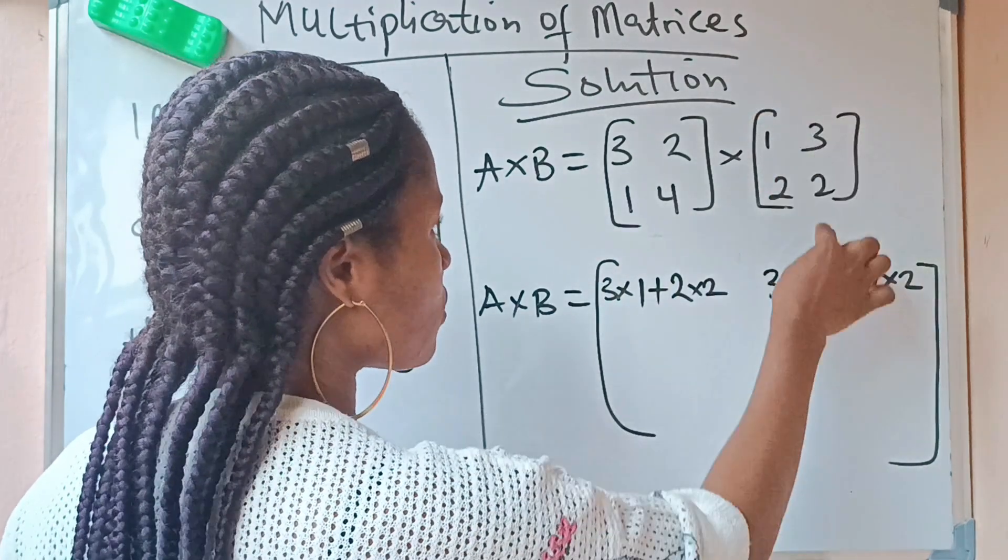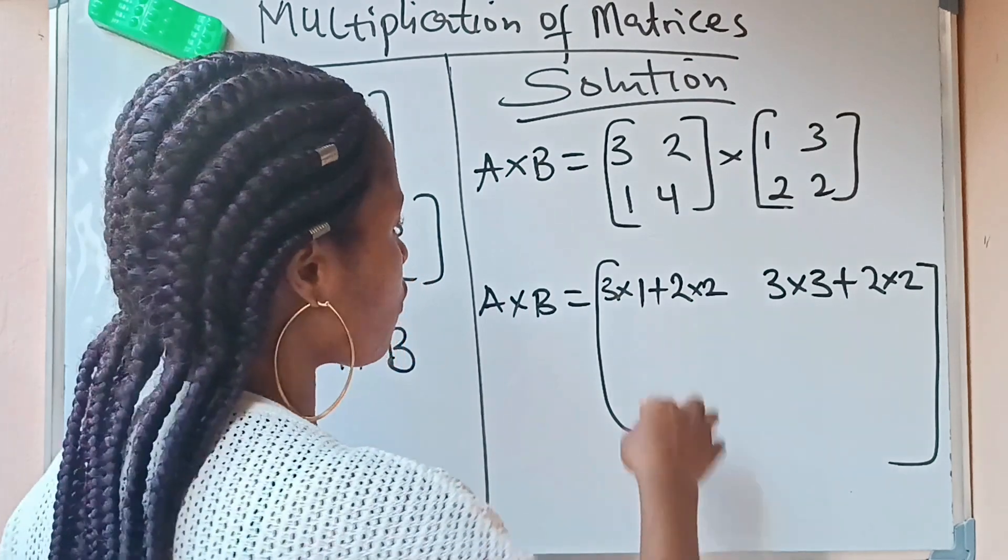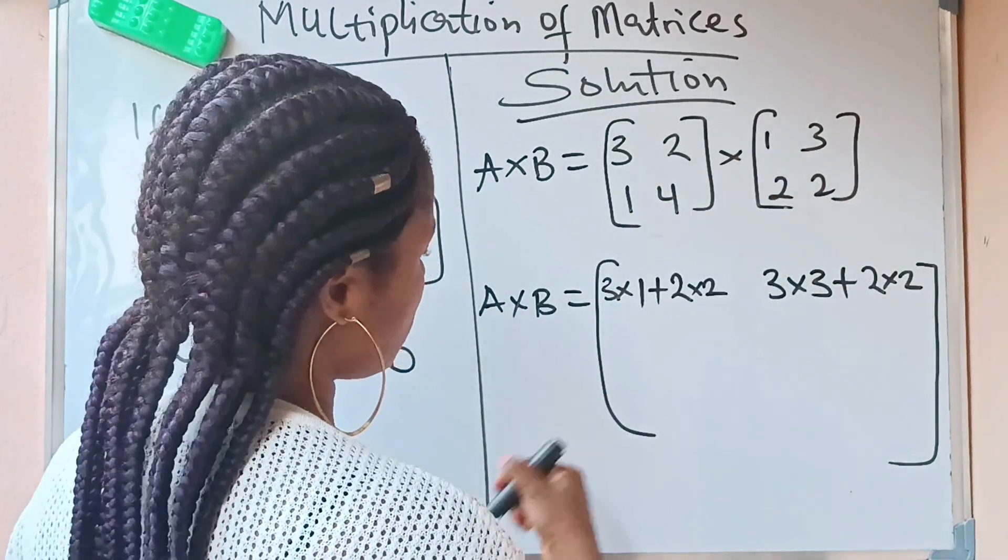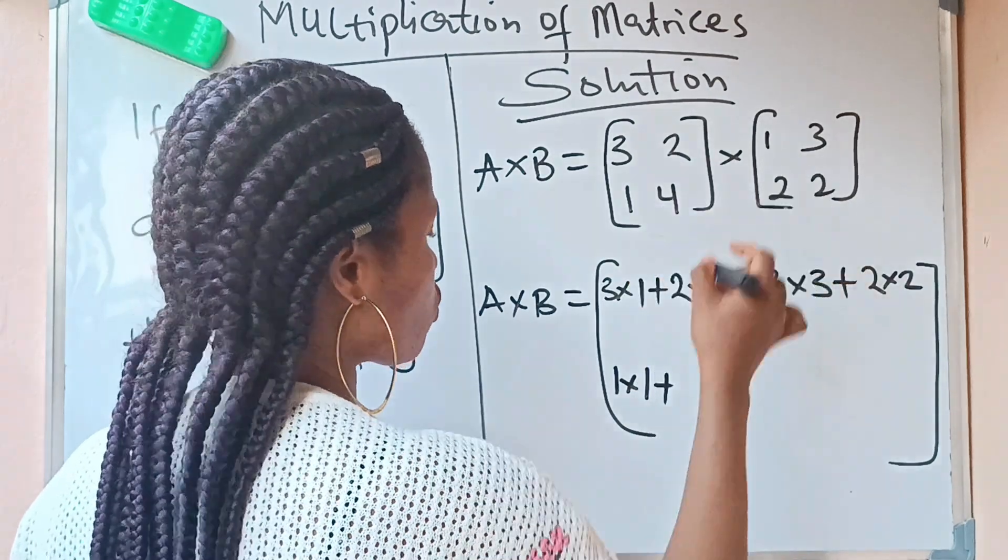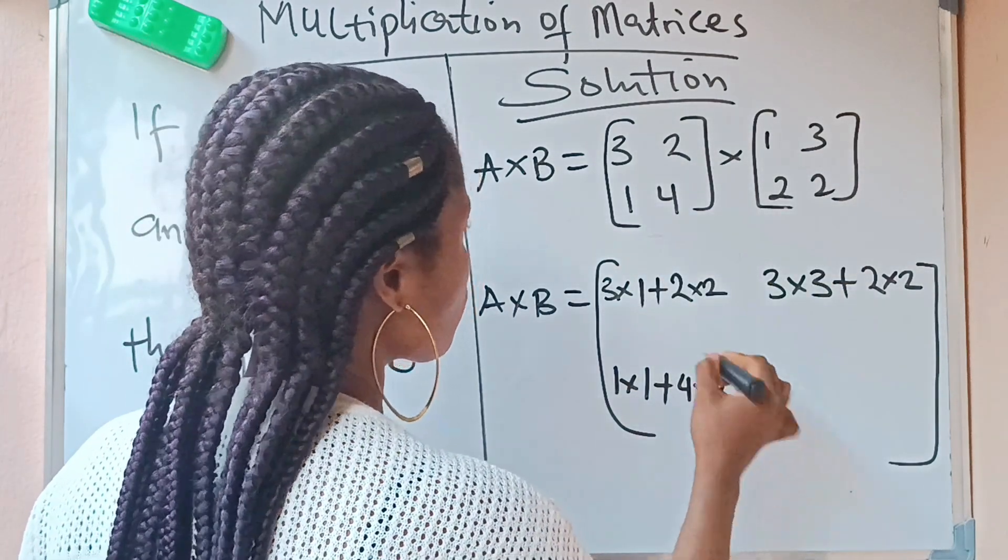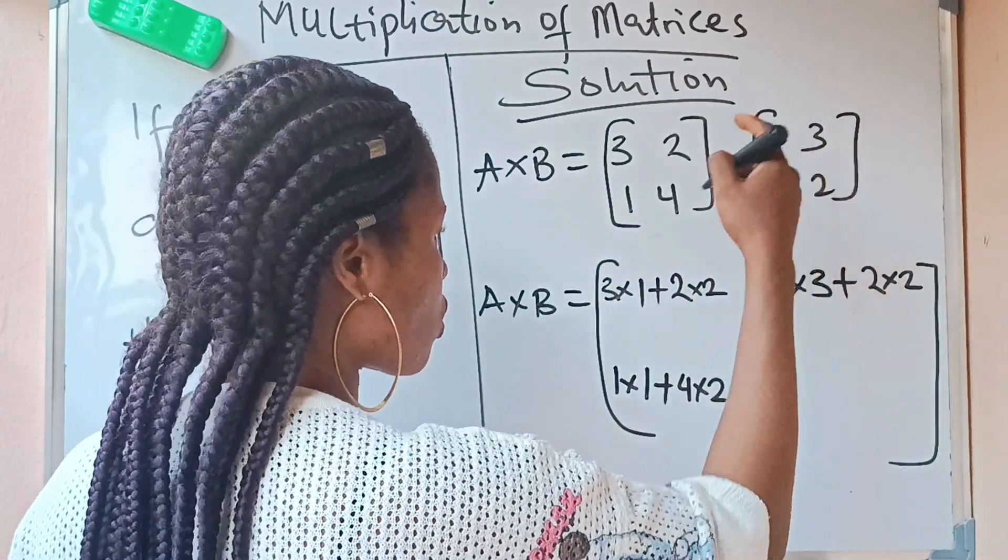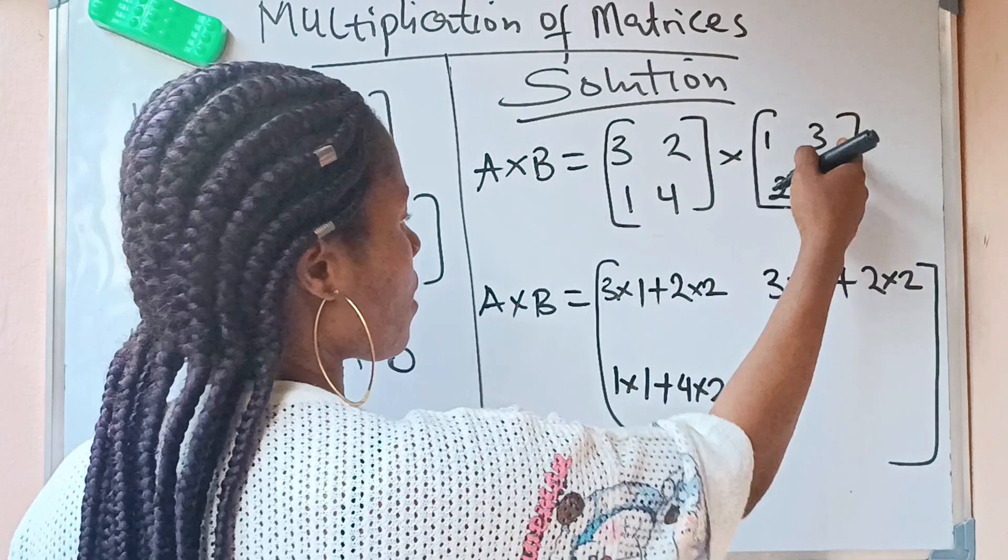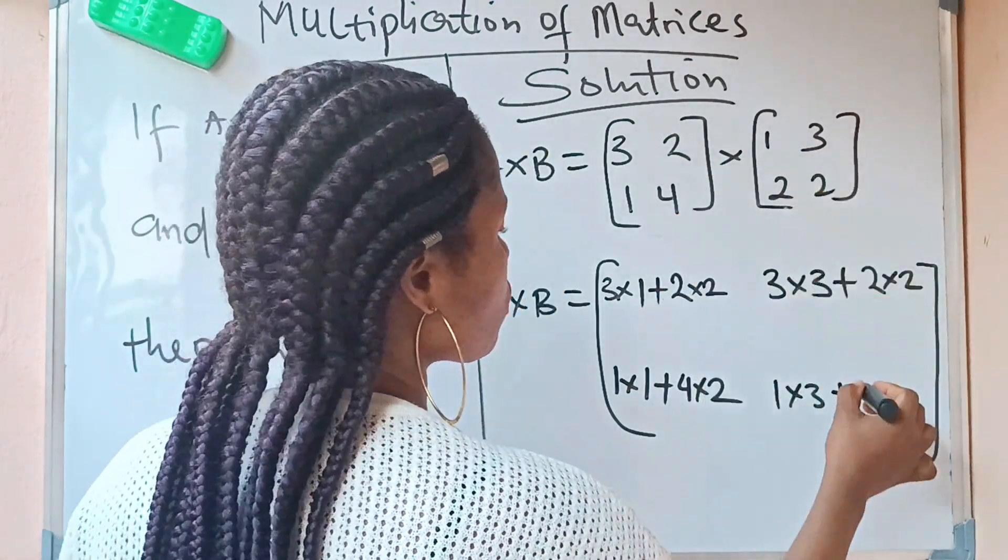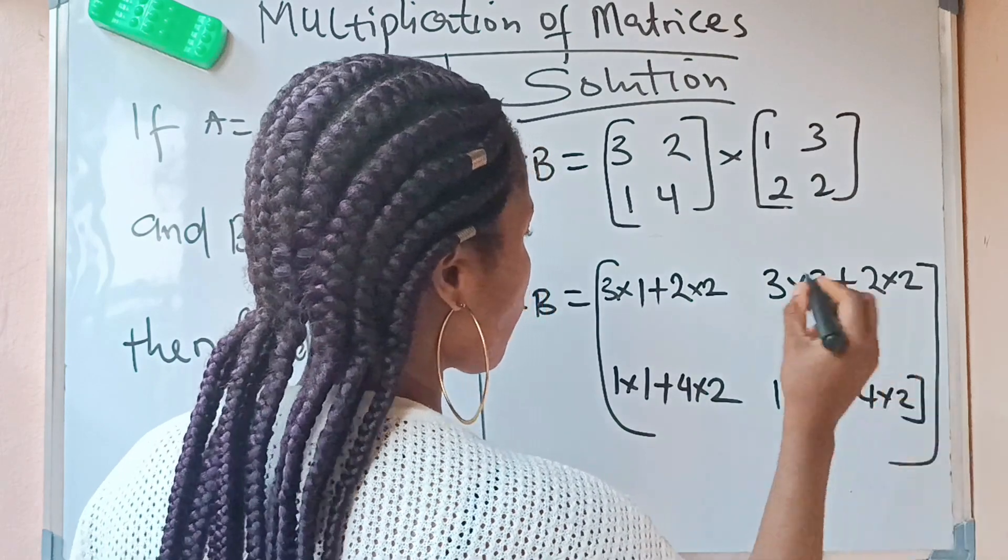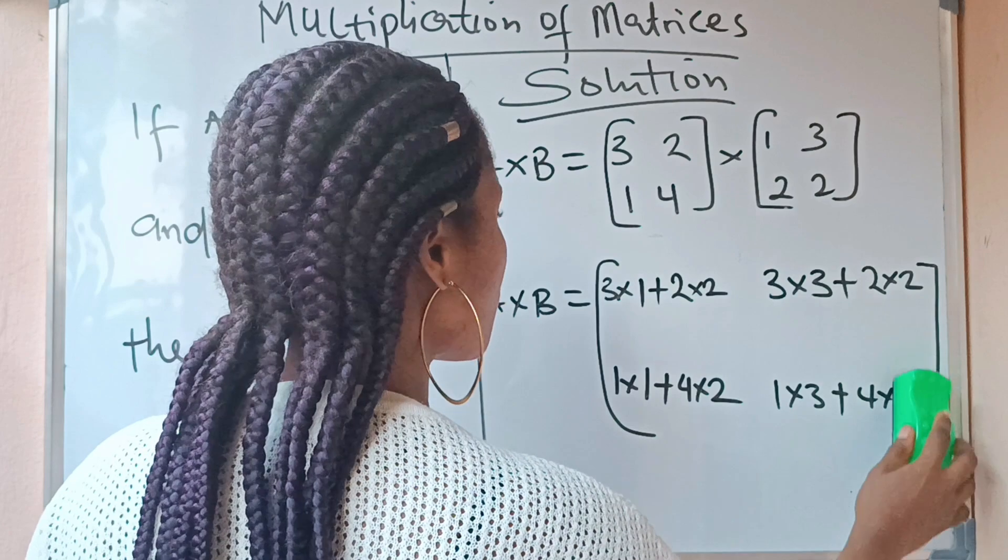The second row against the columns. So we have 1×1 + 4×2. That is this row against this column. I'm going to use this row again to multiply this column, so it's 1×3 + 4×2. If you have something like that, then we are close to the answer.